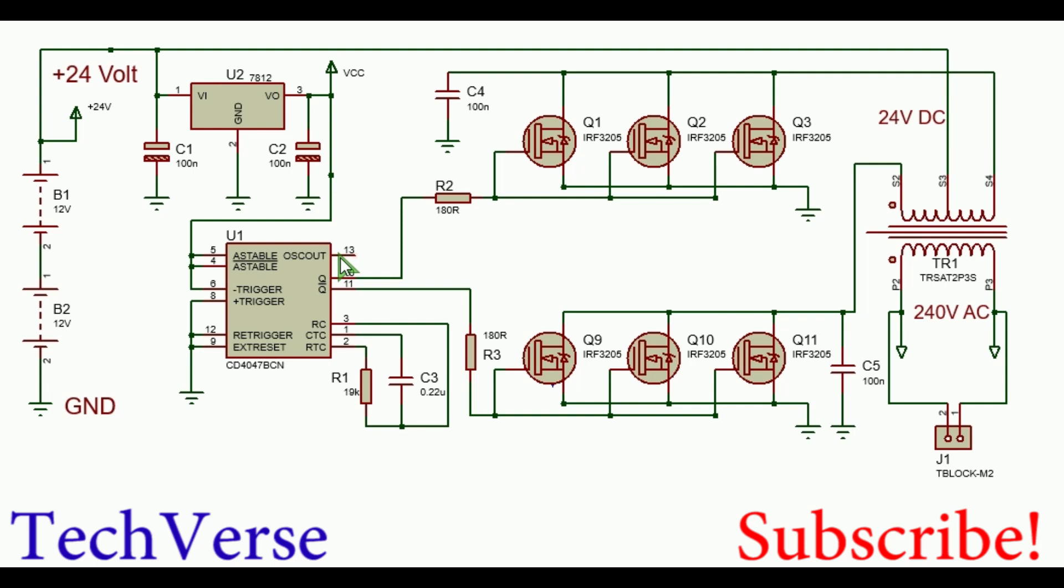When pin 10 is high, the MOSFETs Q1, Q2, and Q3 will all conduct. Since Q bar is low, or pin 11 is low, the MOSFETs Q9, Q10, and Q11 will all be off.